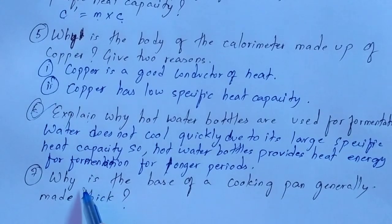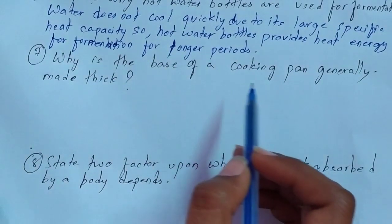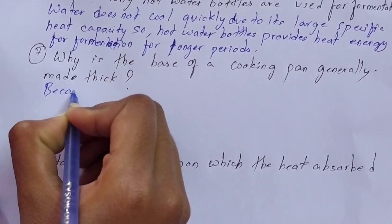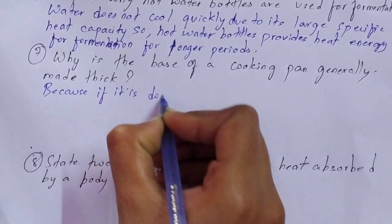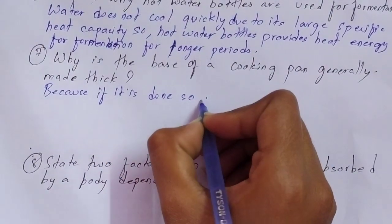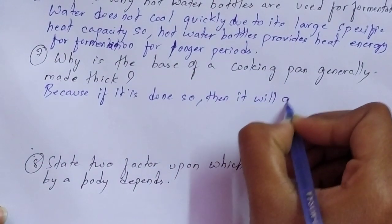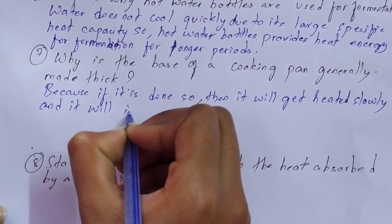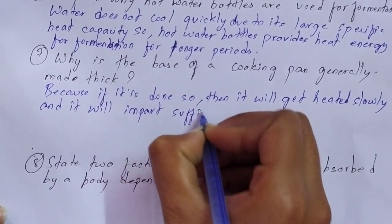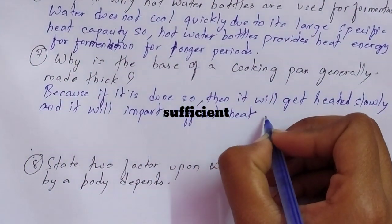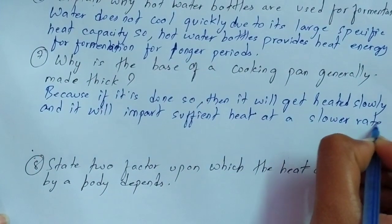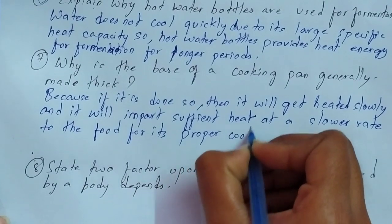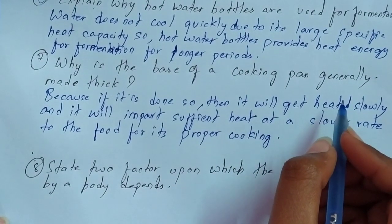Question number 7: why is the base of a cooking pan generally made thick? The base of a cooking pan is generally made thick because if it is done so, then the pan will get heated slowly and will impart sufficient heat at a slower rate to the food for its proper cooking.